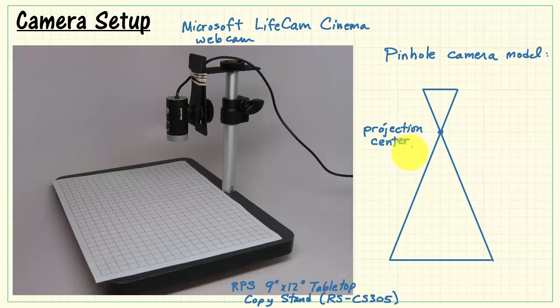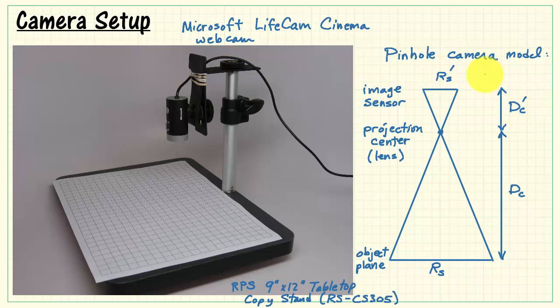This is kind of an idealized model. It's based on a projection center in the middle, essentially the lens. We have our image sensor on the top, and then down here at the bottom we have the object plane. Now, the pinhole camera model allows us to work with the object plane spatial resolution, the image sensor spatial resolution, I'll call that RS prime, and then we have the distance from the projection center down to the object, the distance from the projection center up to the image sensor, and it should point out that both those values are unknown.